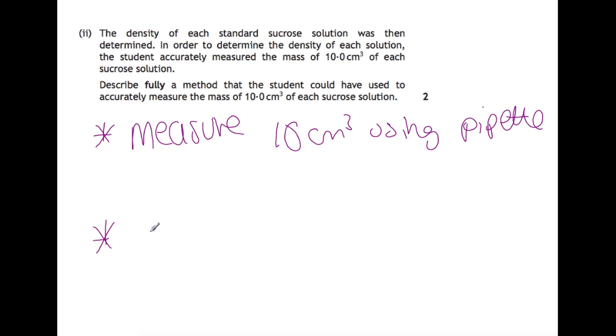Or you can weigh the beaker and know how much it weighs, write that down and then add your 10 cm³ and then take away the weight of the balance of the beaker.